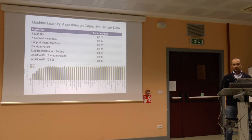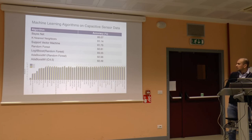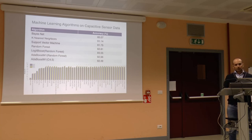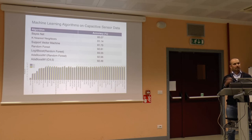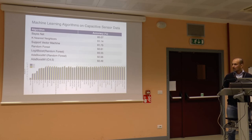For classifying between different positions we tried a large number of machine learning algorithms. The top results come from classical machine learning algorithms, and the bottom three are boosting algorithms that work on top of the others. We achieved more than 93% accuracy when classifying between different positions. We gathered around 40 different experiments and divided them 75% training and 25% test data, with randomized data and multiple runs to verify statistical significance.